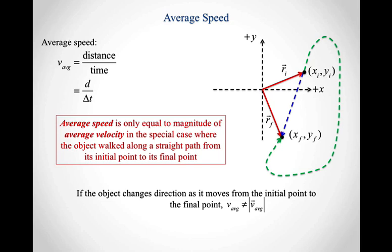So if the object changes direction at all as it moves from its initial point to its final point, so turns left, turns right, turns around, any of those, then those two quantities, the average speed and the magnitude of the average velocity, are not going to be the same.